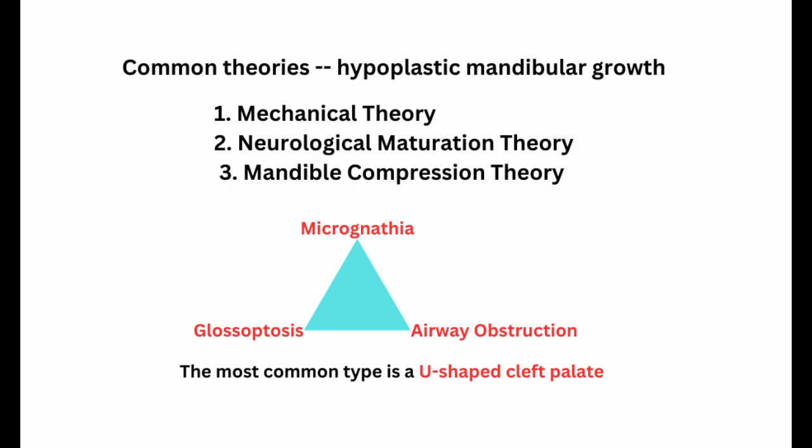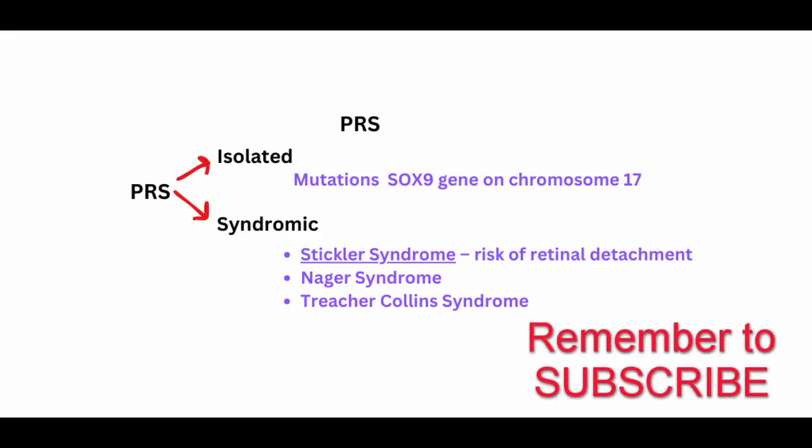The second is the neurological maturation theory, where there is delay in the neuromuscular development of the tongue. The third is the mandibular compression theory, which proposes that extreme forces such as multiple gestation, uterine anomalies, or oligohydramnios cause the fetal head to become flexed, compressing the mandible against the chest, rendering it unable to grow appropriately. The tongue continues to grow normally and is ultimately displaced backwards, causing potential obstruction of the upper airway and embedding the tip of the tongue in the fusion of the palatal halves, leading to cleft palate.